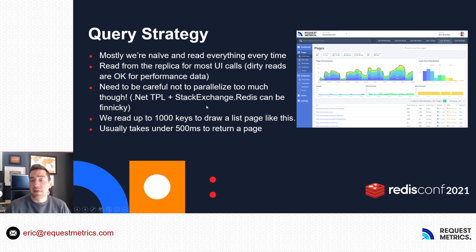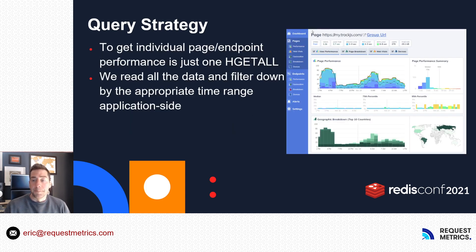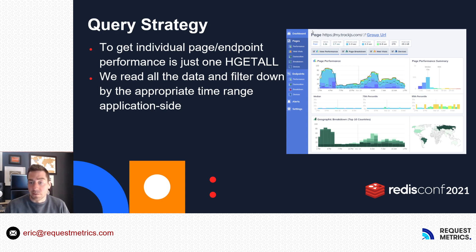In .NET land, you want to be careful about how parallelized you get in terms of your reads. It looks like you should be able to go as wide as you want with the Task Parallel Library, but in practice we found some issues. The way we set up the data is that all of the data for a given page lives under a certain key, so to draw the data for a specific page or endpoint, all we have to do is an HGETALL against that key and we're good to go. It's really quite simple.